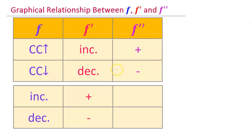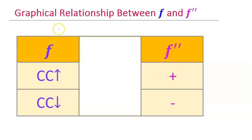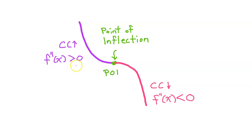A long time ago you should have memorized the graphical relationships between F, F prime, and F double prime. If you haven't memorized these yet, I recommend that you pause the video and do so right now. In this video we're going to focus on just the relationship between F and F double prime. Specifically, if F double prime is positive, the original function F will be concave up. If F double prime is negative, F will be concave down.